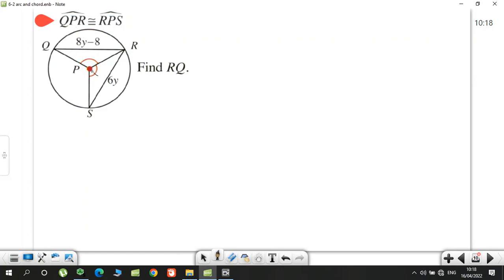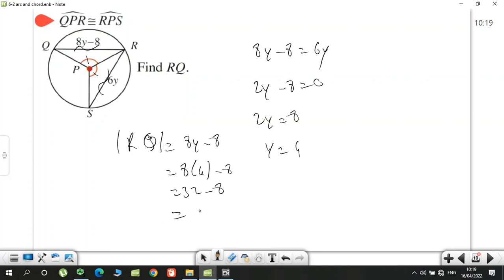Okay, as you see these angles are given QPR, RPS. These two angles are given congruent. What we know? If the angles are congruent, chords are congruent. So QR and SR are congruent. What can I say here? 8y - 8 equals 6y. 2y - 8 equals 0. 2y equal 8. Y equal 4. What is the question? RQ. So RQ, measure of RQ, is equal 8y - 8. 8 times 4 minus 8 is 32 minus 8. What's 32 minus 8? 24. So that's 24.